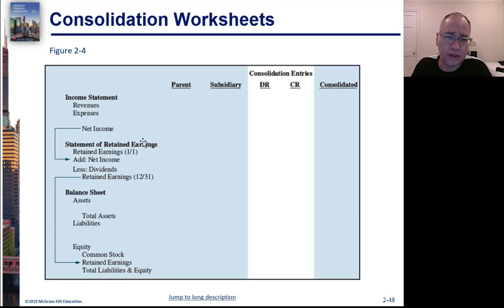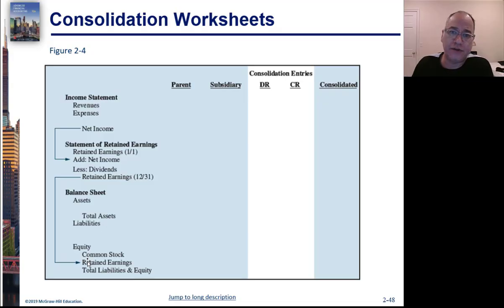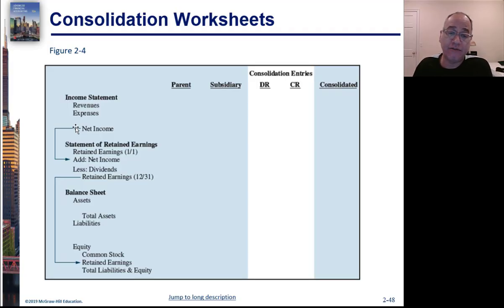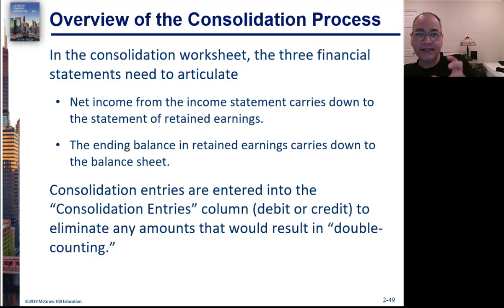Net income from the income statement flows into the statement of retained earnings, and ending retained earnings flows into retained earnings on the balance sheet. The articulation of financial statements is very important here — you've got to understand how the income statement ties into the statement of retained earnings through net income, and how ending retained earnings winds up on the balance sheet. These financial statements need to articulate, meaning they need to fit together and numbers on one need to match the other.